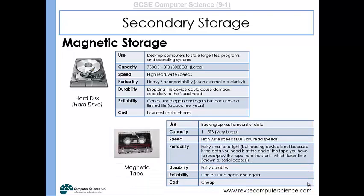Magnetic tape was used for audio file storage back in the 80s, but it is still used today. It has very large capacities and is very good for backing up data. It has very quick write speeds but very slow read speeds. The main reason is that data is serial access — you have to read from start to finish, so if the data you're looking for is at the end of the tape, you need to work your way through it. Magnetic tape is fairly small and portable, fairly durable, can be used over and over again, and is very cheap.